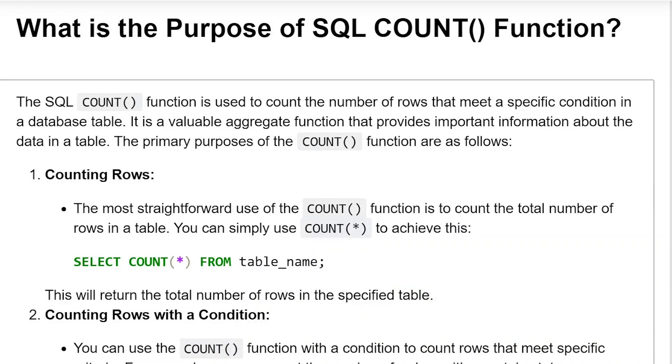What is the purpose of SQL count function? The SQL count function is used to count the number of rows that meets a specific condition in a database table. It is a valuable aggregate function that provides important information about the data in the table. The primary purposes of count function are as follows.